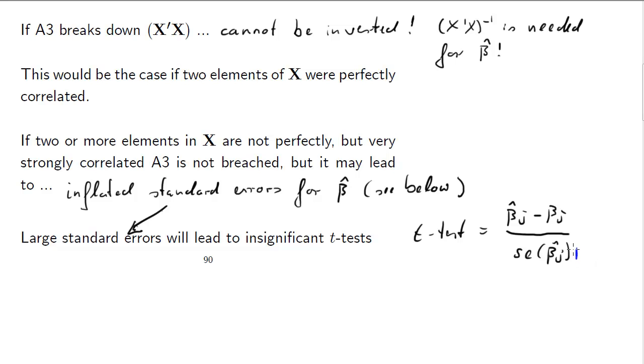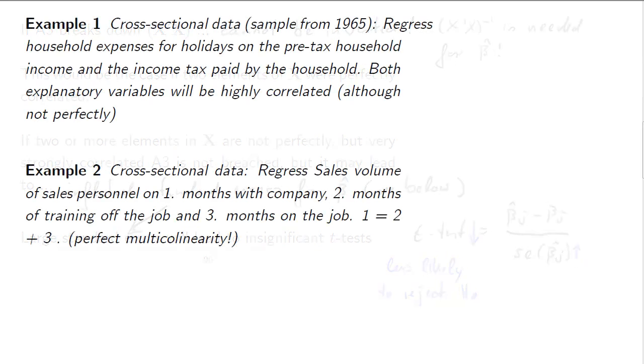Of course, if that guy becomes very large, then the t-test will become very small. And the consequence of small t-tests is that we are less likely to reject a null hypothesis. So it makes it more difficult to do that if we have a problem of multicollinearity.